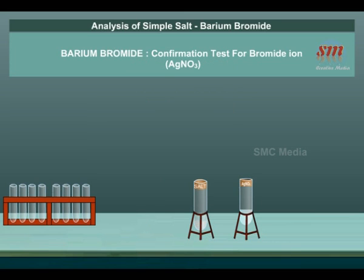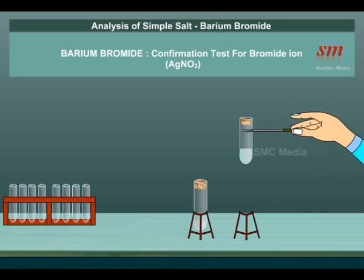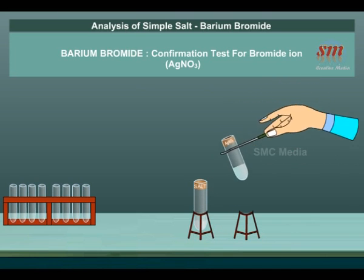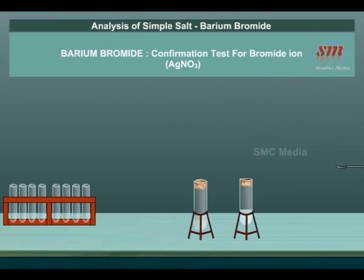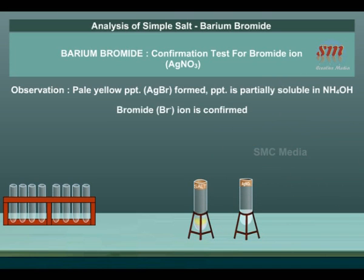Action of AgNO₃ solution: To the salt solution, AgNO₃ solution is added. A pale yellow precipitate of AgBr is formed. The precipitate is partially soluble in NH₄OH solution. Bromide Br⁻ ion is confirmed.